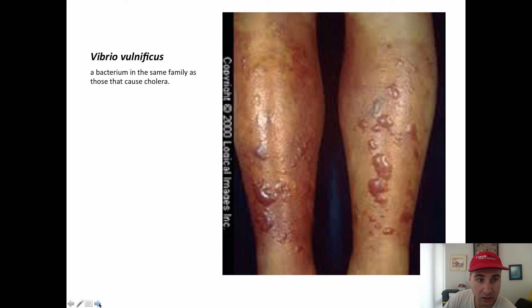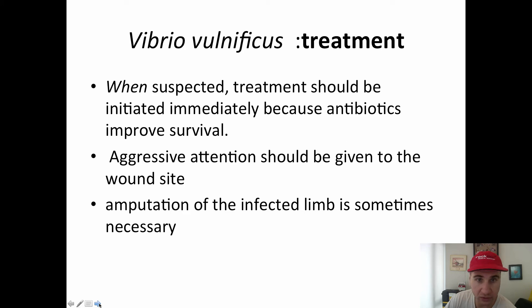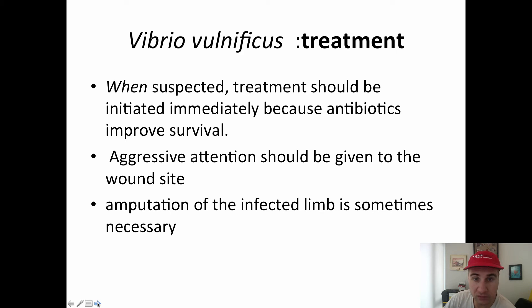Vibrio is a bacteria in the same category as cholera. It mostly occurs when your skin gets exposed to seawater — it lives in seafood and marine environments. This one can be very dangerous and can even lead to amputation or death, so you need antibiotics right away. During Katrina there were a few cases, and many of those patients died because they didn't seek treatment quickly enough. The ones who went right away survived, because once you reach a certain point of no return, the body cannot cope even with antibiotics.